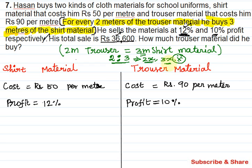So trouser material is 2x and shirt material is 3x. The relation is 2 is to 3 — so 4 is to 6, and 8 is to 12. When trouser increases, shirt material increases. The ratio is 2 to 3, so the numbers are 2x and 3x. Trouser is 2x and shirt is 3x.